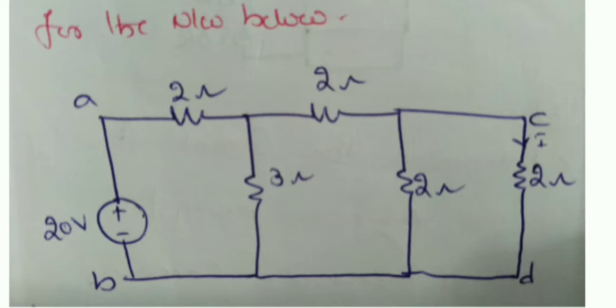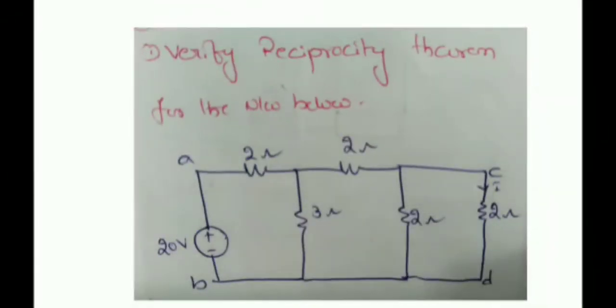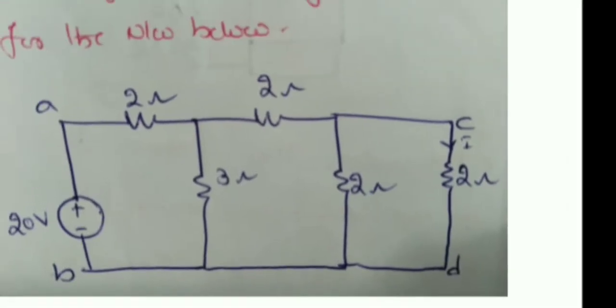In case 1, you need to calculate the total current, and by means of the current division principle, calculate the current through the 2Ω resistor. After that, you need to replace the 20V voltage source in the CD branch and then calculate the total current in case 2. By applying the current division principle again, you need to calculate the current through branch AB in case 2.